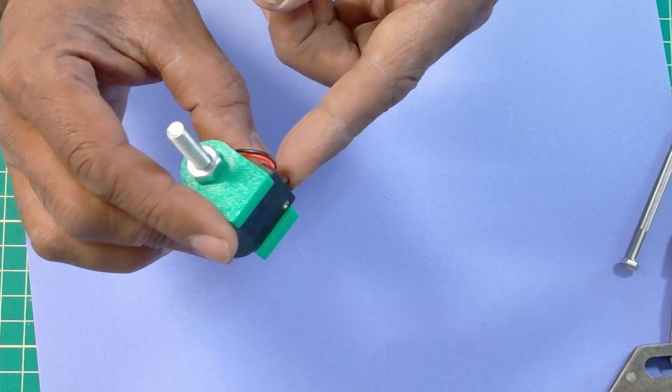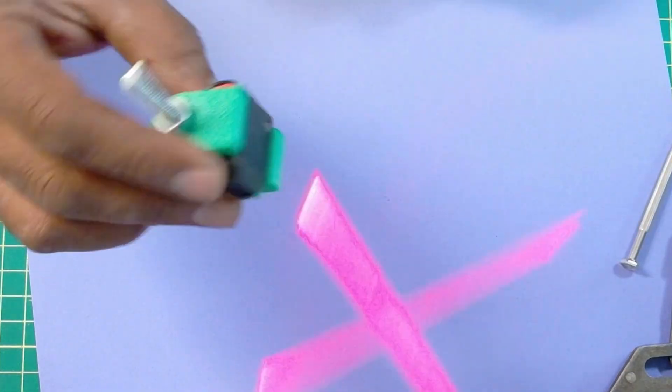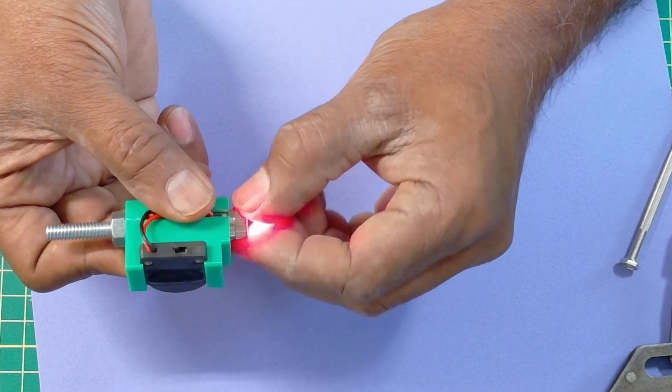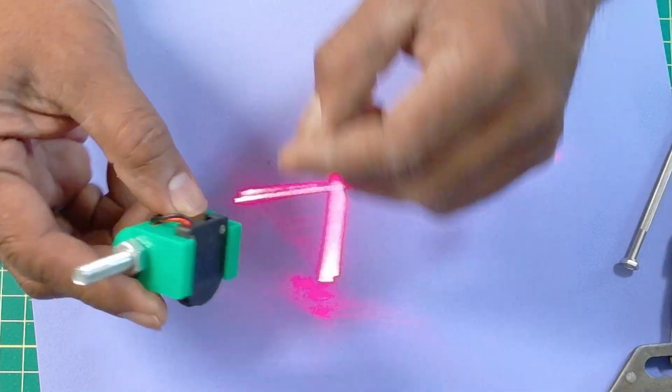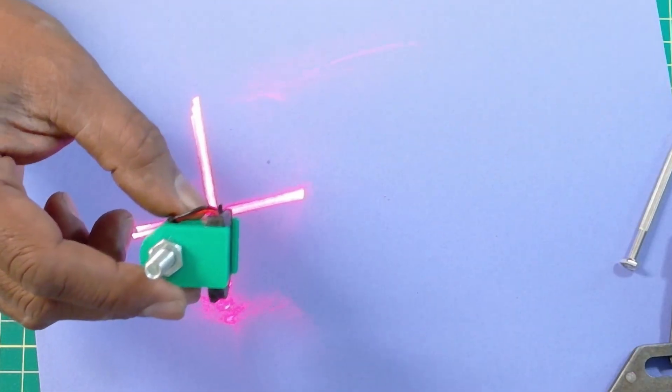So let's just turn this on and make sure it works. There we go. And you can adjust this bevel right here to focus once you have it on your CNC.